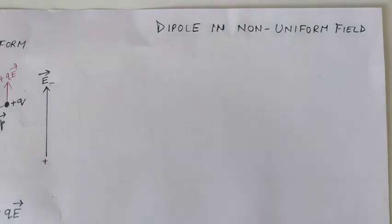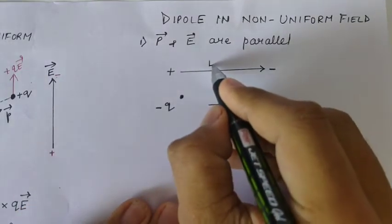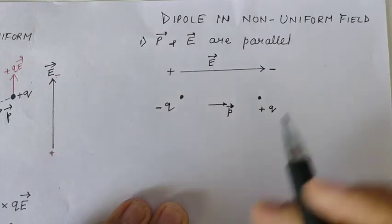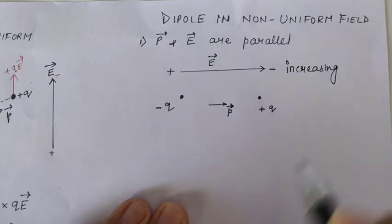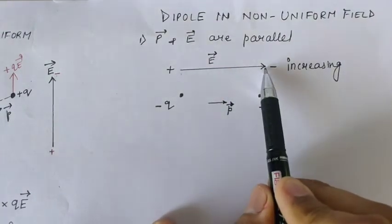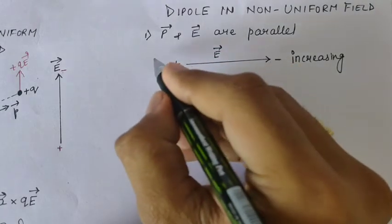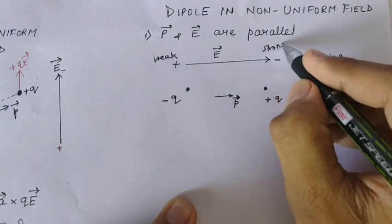Now let's discuss briefly when a dipole is placed in a non-uniform electric field. Here the electric field is non-uniform and increasing as we move from left to right. That means the electric field is weak at the left point and much stronger at the right point.